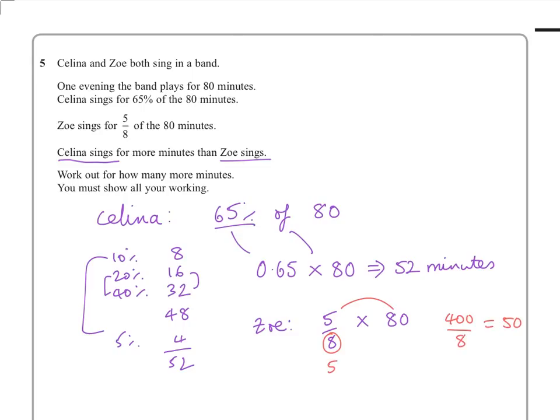Or you can write 5 eighths times 80 whole ones, and switch the denominators around, because 8 times 1 is the same as 1 times 8, and have 5 whole ones times 80 eighths. Do a bit of cancellation, 8th into 80 is 10, and you've got 5 times the 10, which is also 50 minutes.